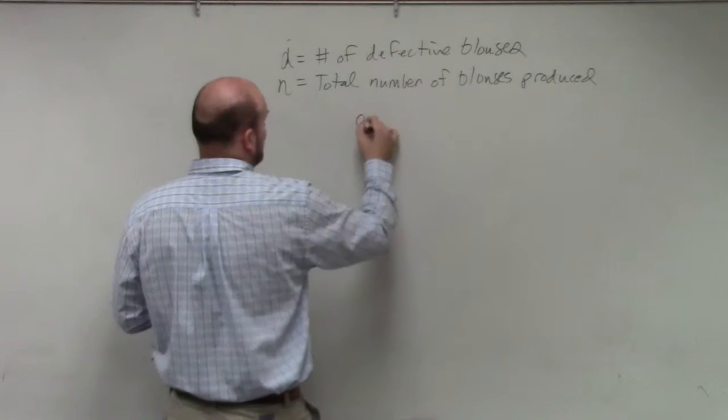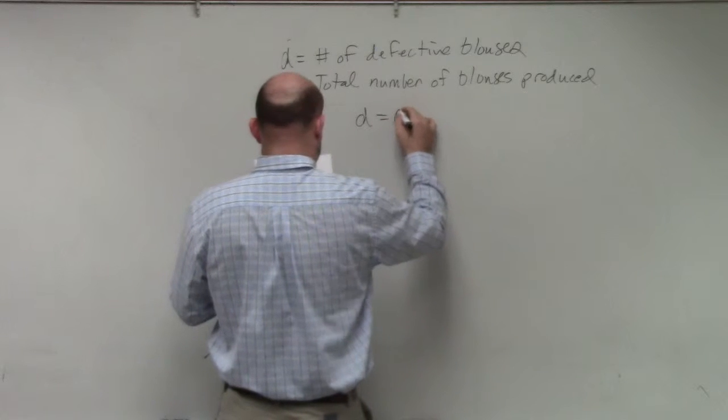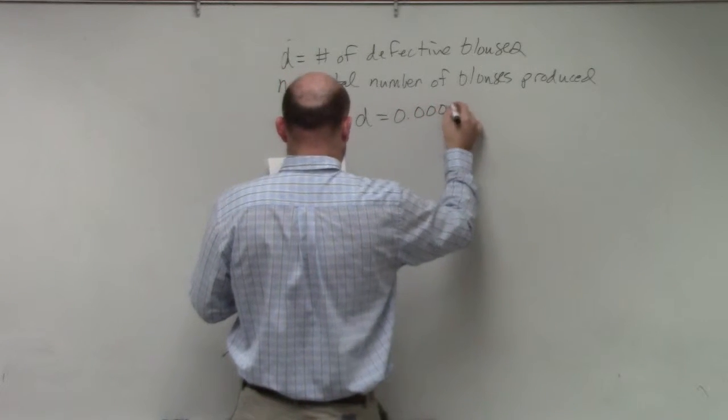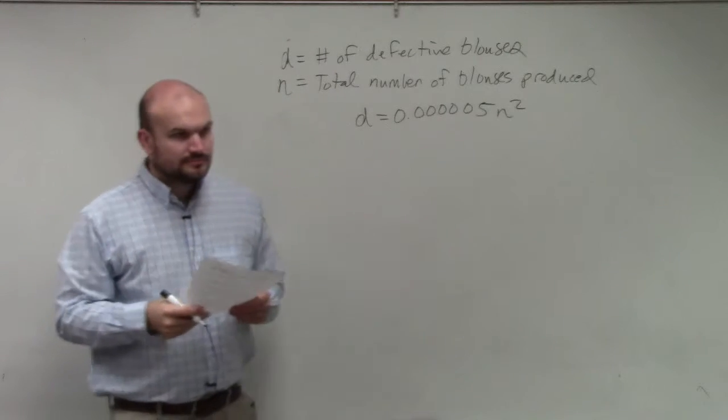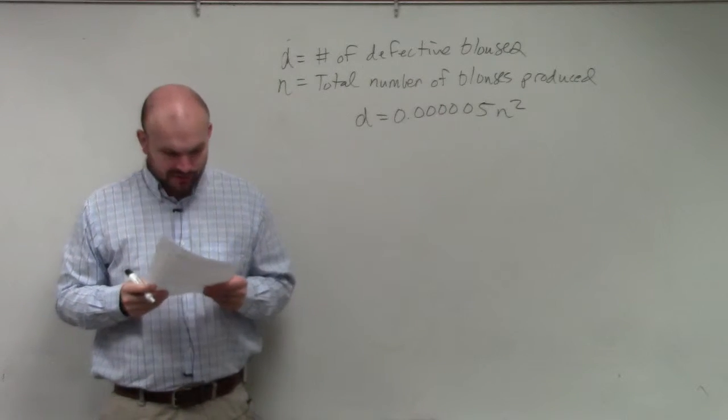And they give us a function of d equals 0.123455n squared. So that's the function that the factory produces.